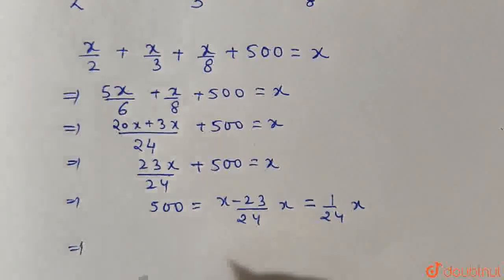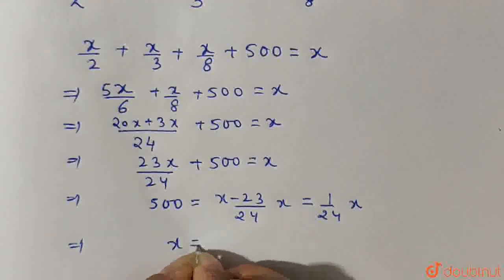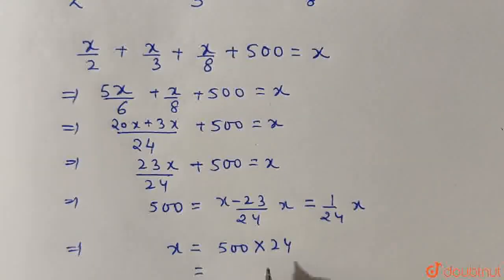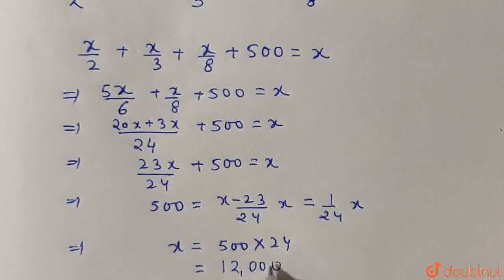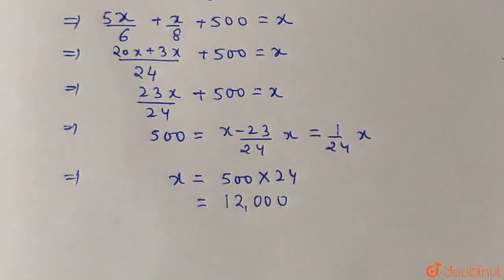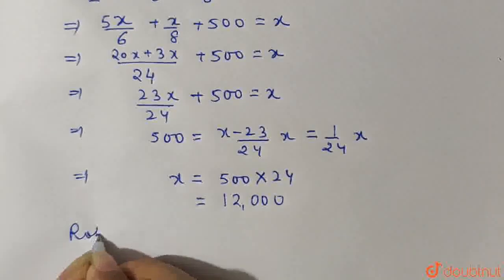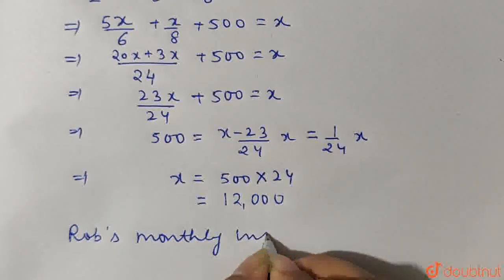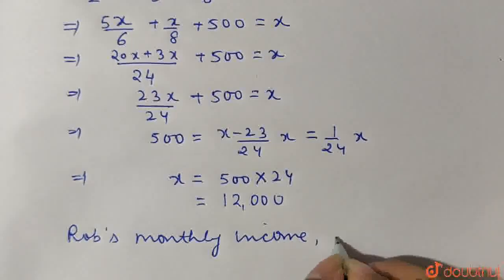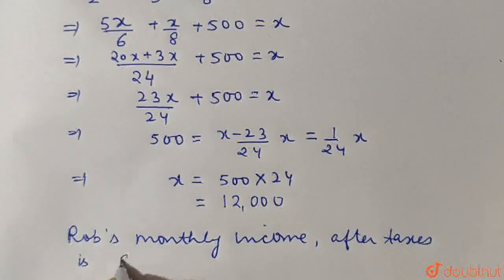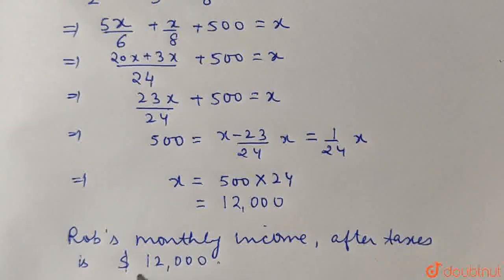So from here finally we obtain that X must be equal to 500 into 24 which is equal to 12,000. That means Rob's monthly income after taxes is $12,000.